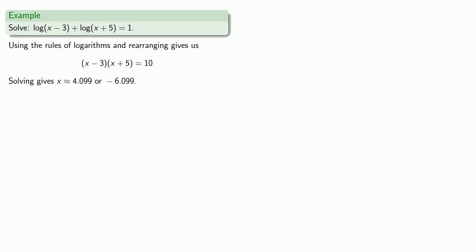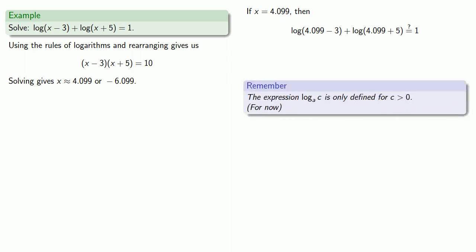So we should always check our solutions. If x is 4.099, then substituting this into our logarithmic equation gives us. Now in general, finding actual logarithmic values is very difficult, so we might not be able to check to see if this is a true statement. What we would at least like to make sure of is that we are not trying to take the log of a negative number. Because remember, log is only defined for positive numbers. So both of the arguments here are positive, so provided we've done the other algebra correctly, x equals 4.099 does seem to be a solution.